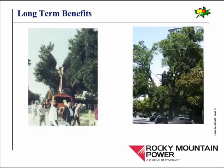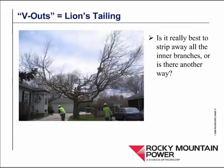Now one problem with following strictly the ANSI A300 recommendation to remove branches entirely is that we are lion's-tailing. This is the same picture I showed before describing lion's tailing. There's no question that veeing a tree out like this and stripping all the branches out from the inside is lion's tailing.